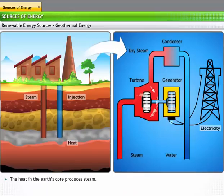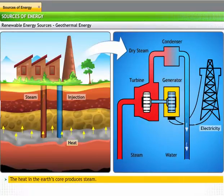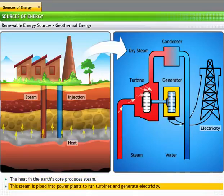Geothermal energy is derived from steam produced due to extreme heat in the Earth's core. This steam is channeled into power plants to run turbines and generate electricity. Sometimes, a deep well, called an injection, is used to pump water into the heat pocket and pressurize the steam up to the power plant.